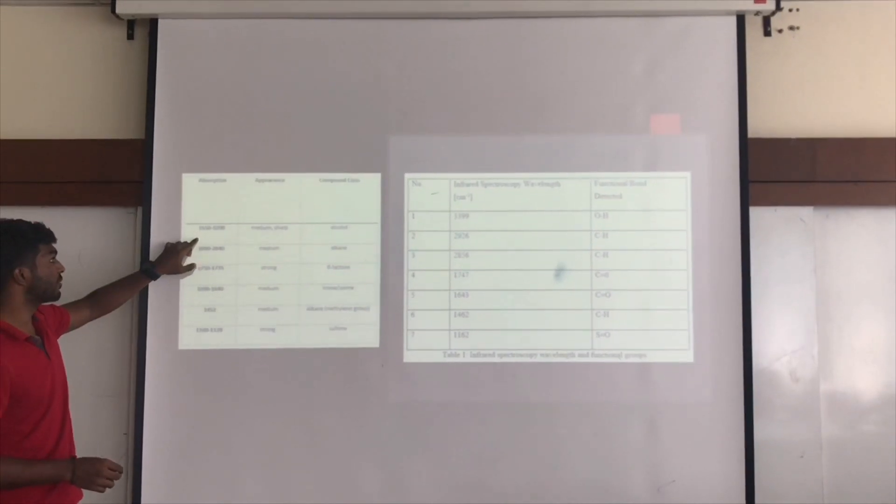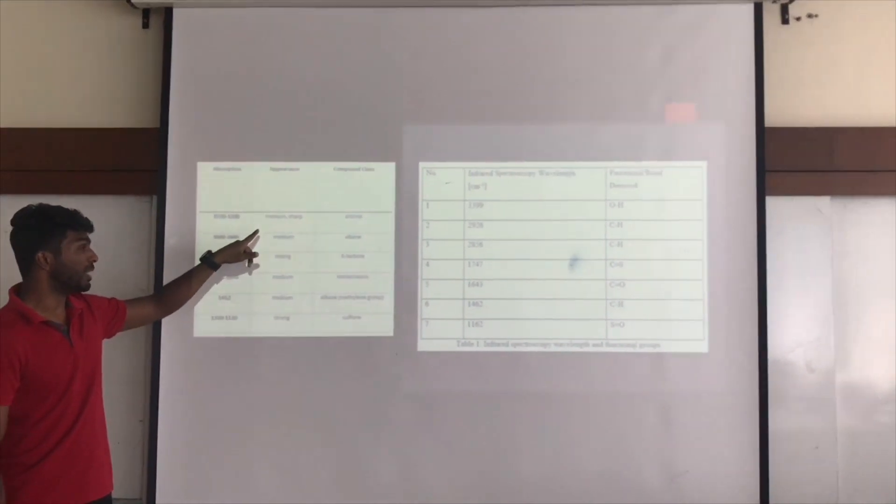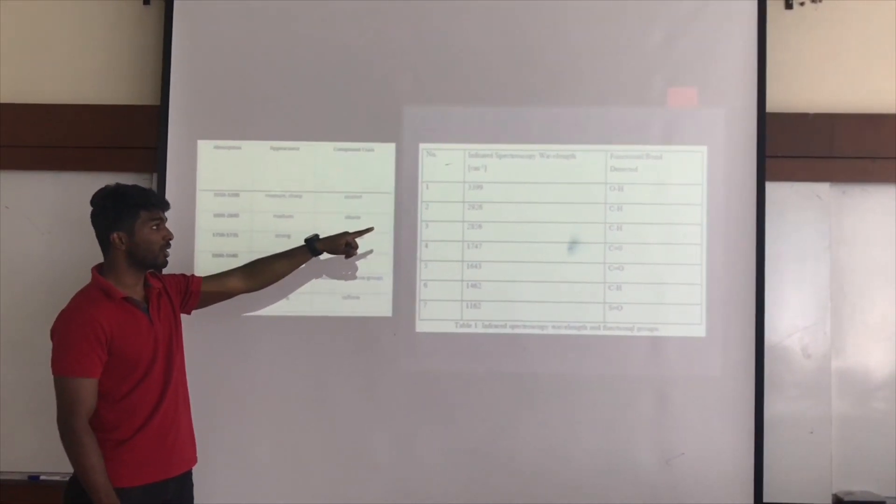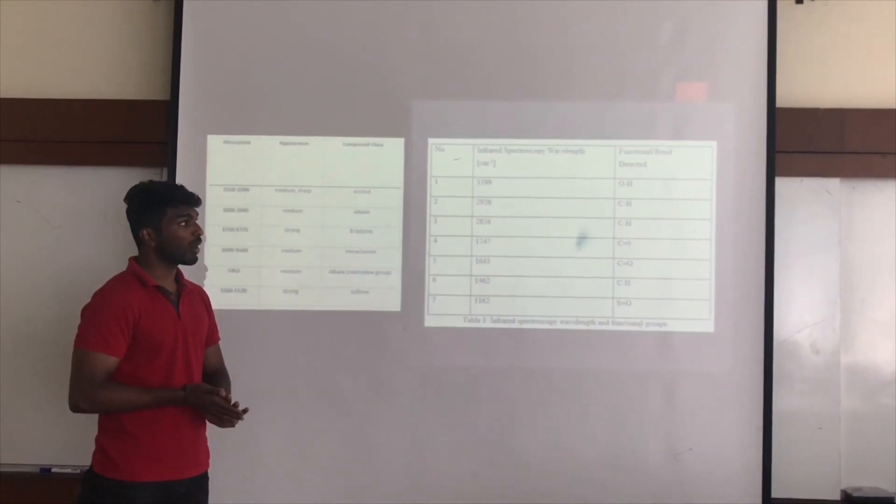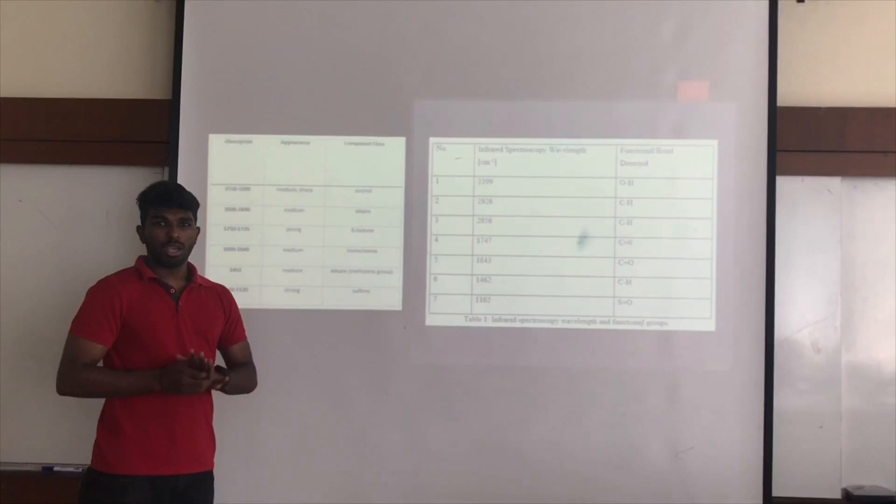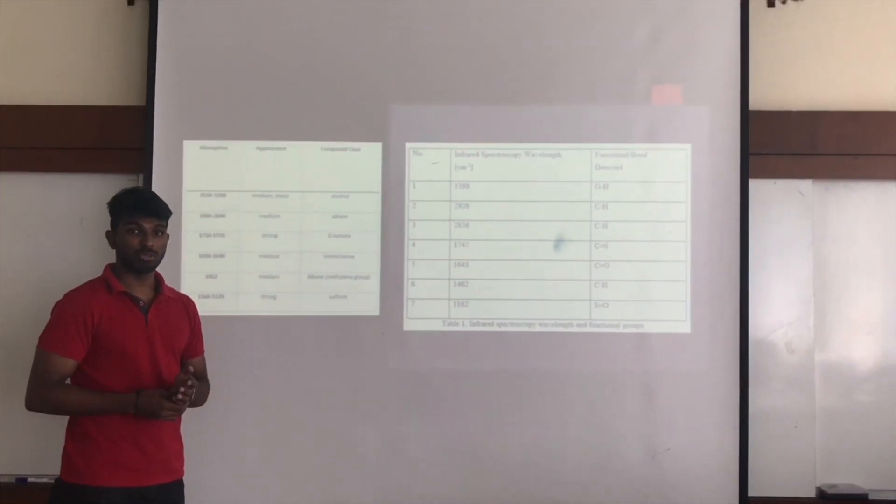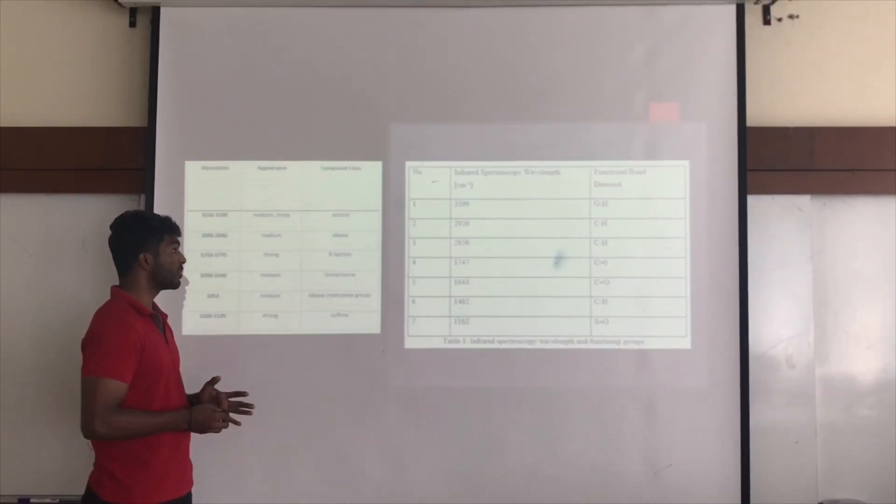The range from 3550 to 3200 shows a sharp and medium range, and we got 3399, a functional bond O-H. This is actually quite true because the sample we used was a juice, and O-H bond is present in water, and juice has lots of water in it.